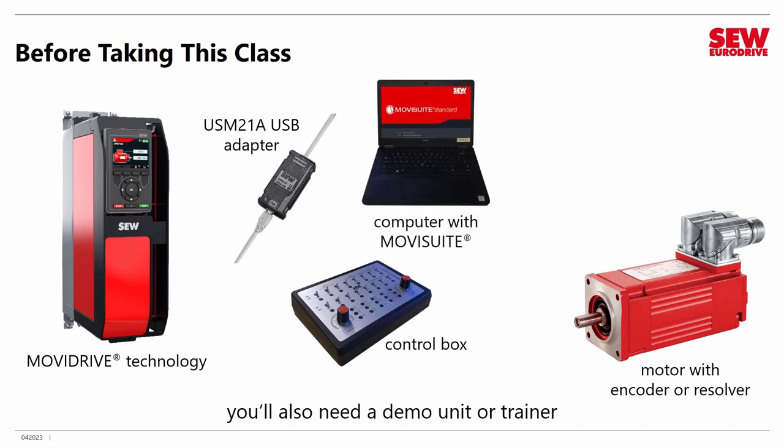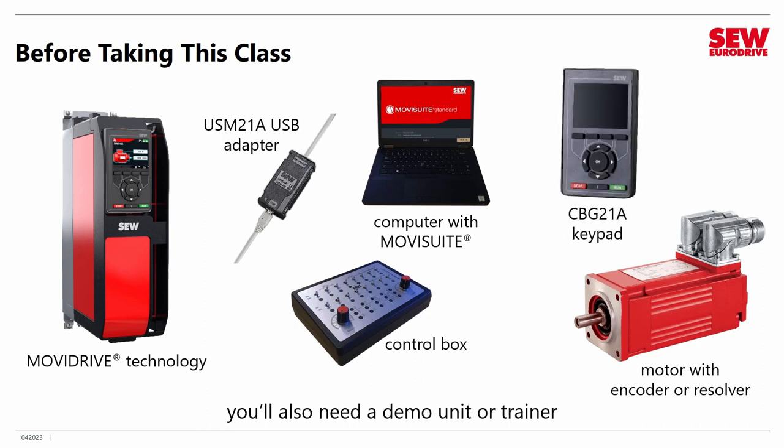You'll need a computer loaded with our MoviSuite engineering software — the standard edition, which is free and downloadable from the SEW website. To do one of the labs, you will need the CBG21A keypad, which is the full-color keypad you can see attached to the MoviDrive technology. If you do not have this, it's okay — you'll just have to skip the hands-on activity, but you can watch it. You should have it if you want the full experience to learn to use the keypad.